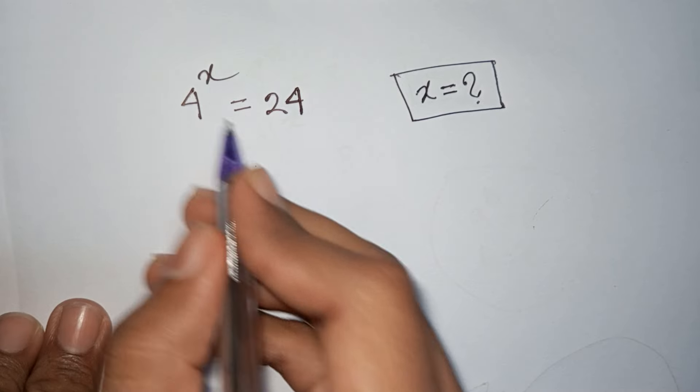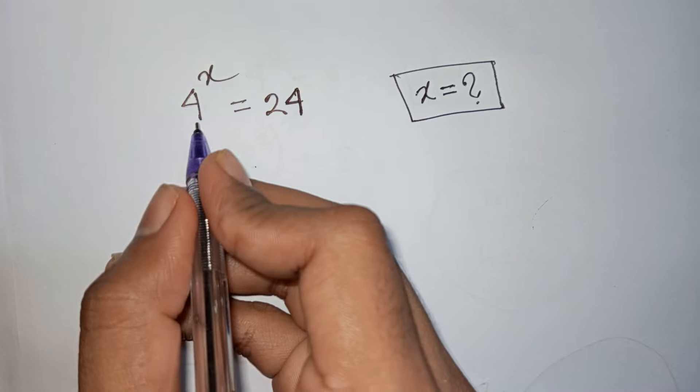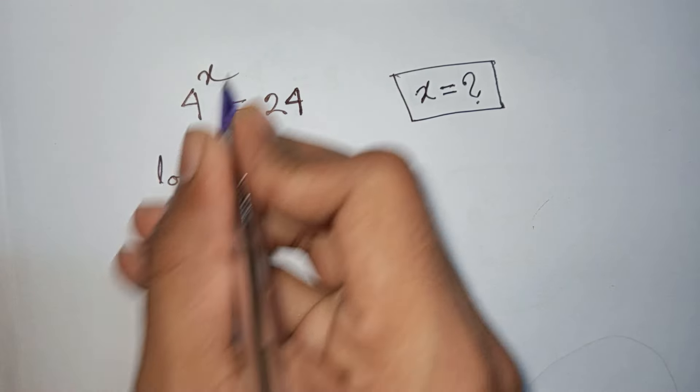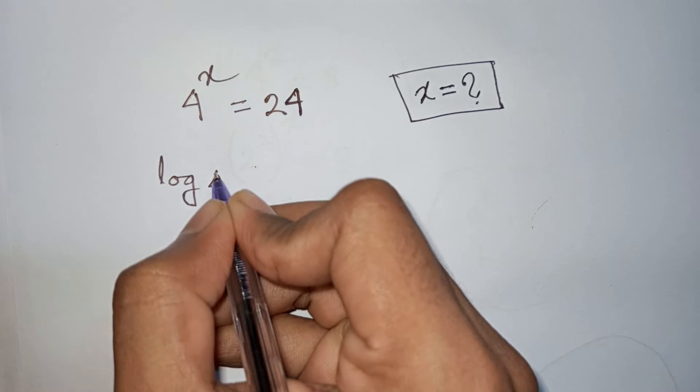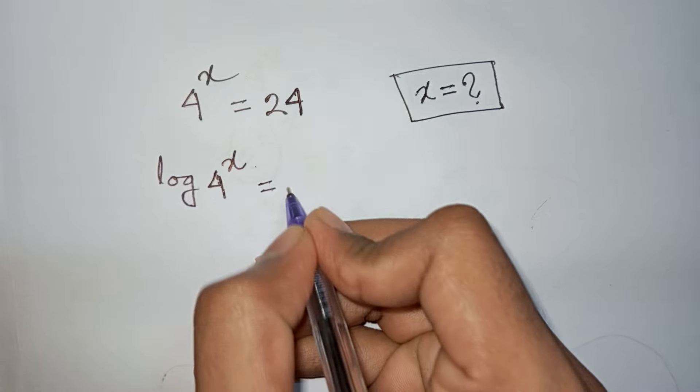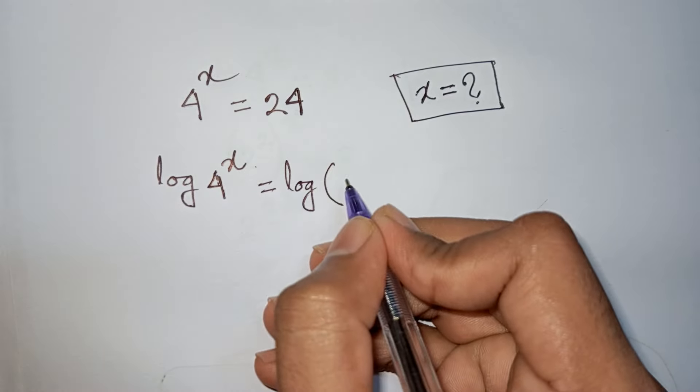How to solve 4 power x is equal to 24, find the value of x. So at first we take log in both sides. You can write here log of 4 power x is equal to log of 24.